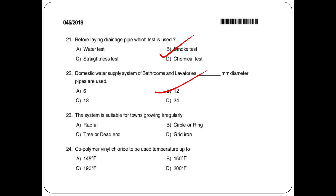The next question: which system is suitable for a town growing regularly? Options: radial, circle, ring tree, dead end, grid. The answer is option C: dead end system.